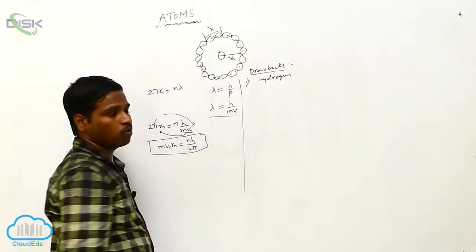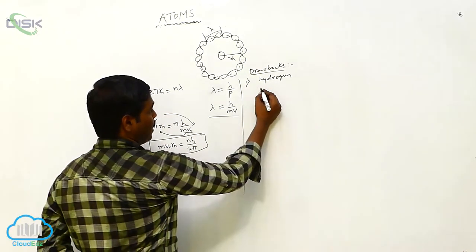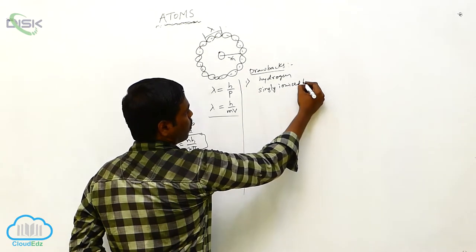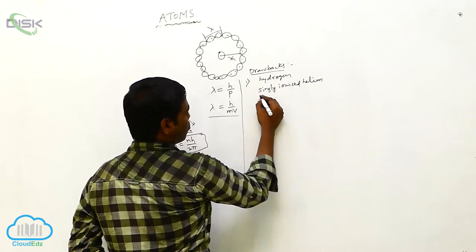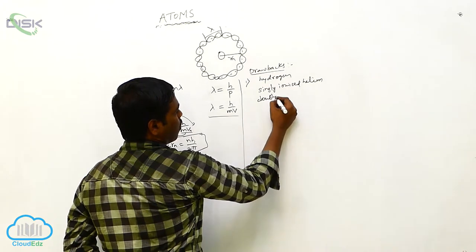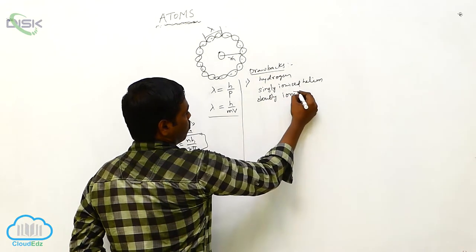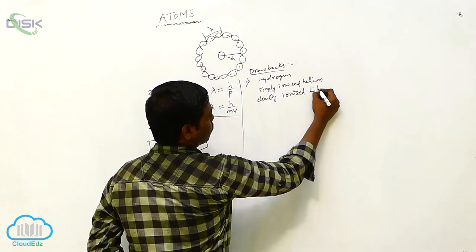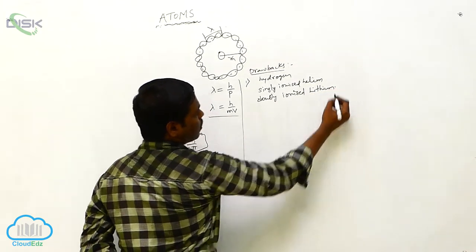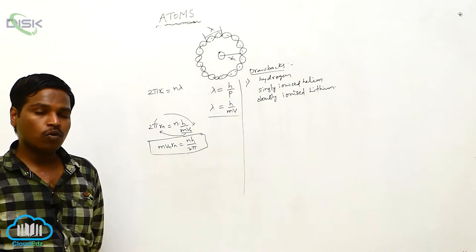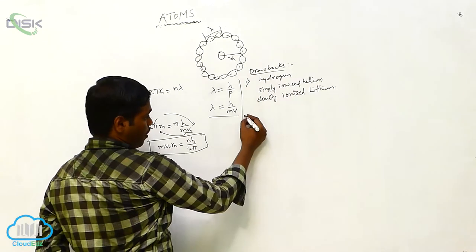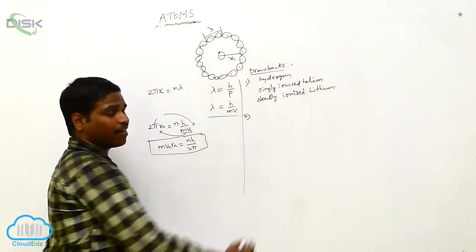It is also applicable for singly ionized helium and doubly ionized lithium. For these atoms only, Bohr's atomic model is applicable and we can get the spectral lines.